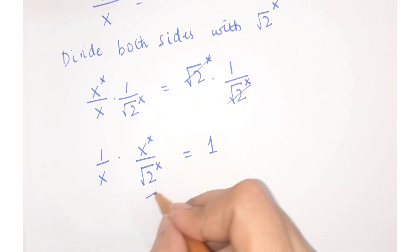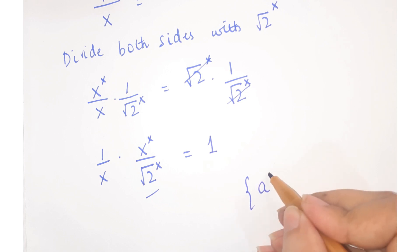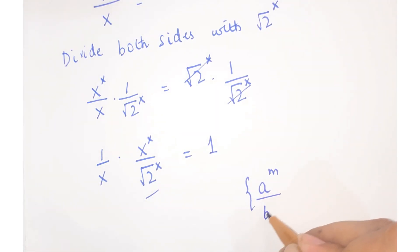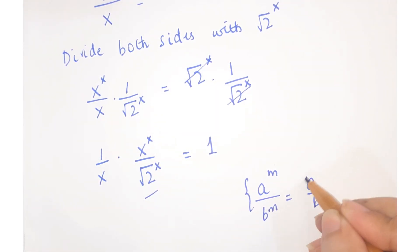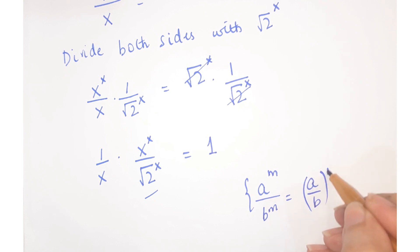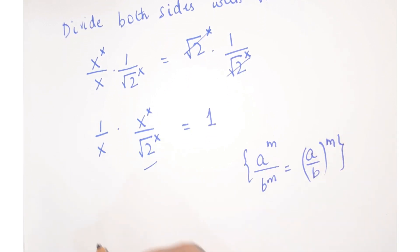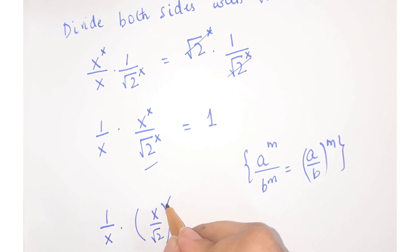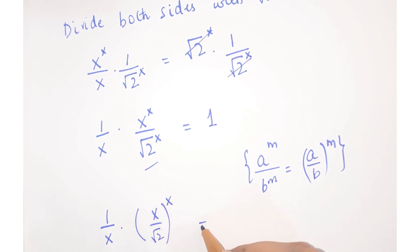Now for this, as you know that a to the power m upon b to the power m can be written as a upon b whole to the power m. So we can write this as 1 upon x into x upon under root 2 whole to the power x is equal to 1.